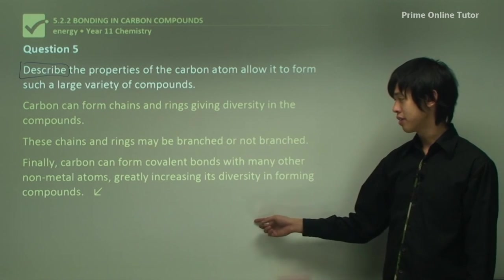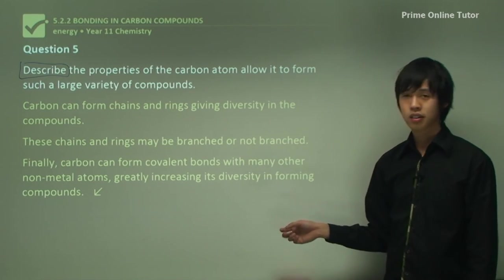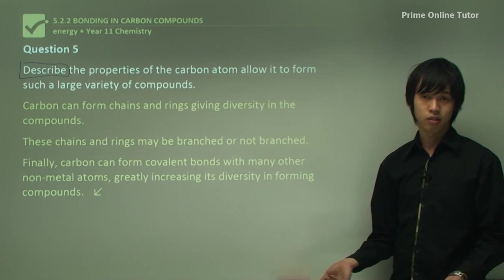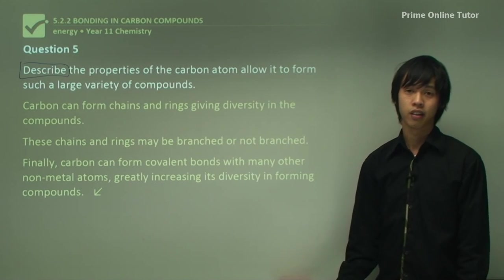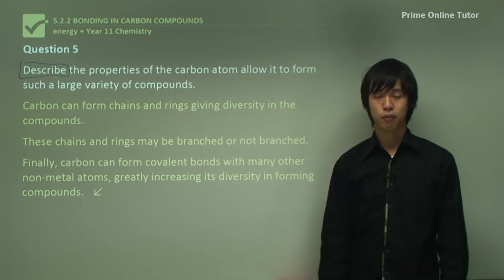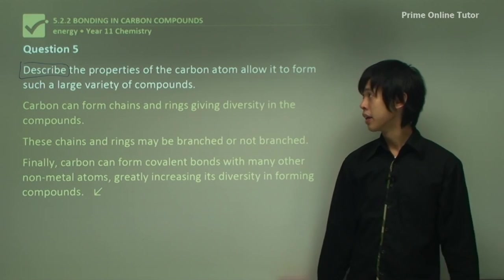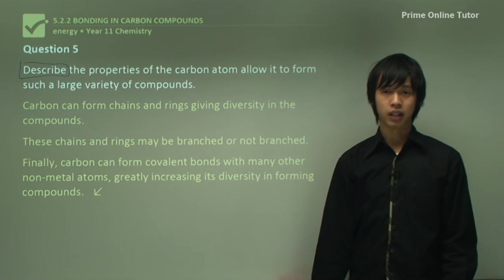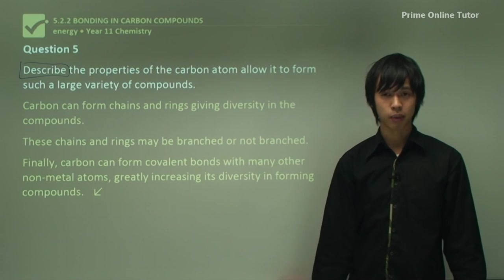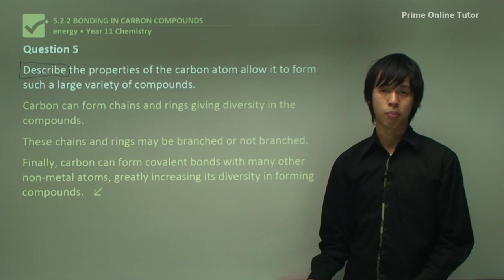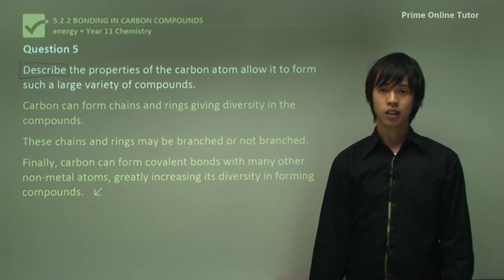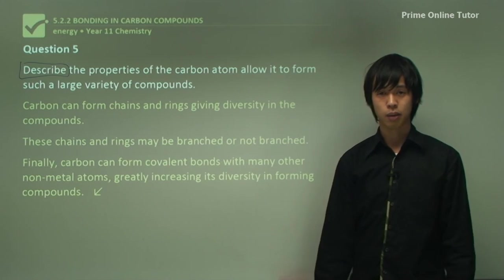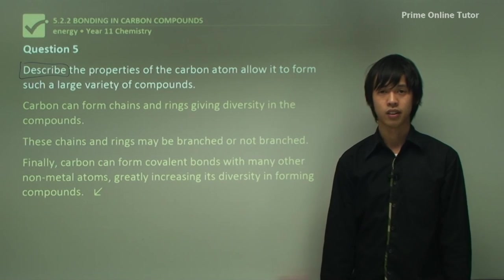Carbon can also form covalent bonds with many other non-metals such as nitrogen, oxygen, and hydrogen, greatly increasing its diversity. That concludes today's lesson on bonding in carbon. We've learned why carbon can bond to so many different things, why we get such a variety of chemicals, and the typical ways carbon bonds to itself and other chemicals. In the next lesson, we'll talk about hydrocarbon chemistry and organic chemistry — I look forward to seeing you then.